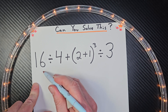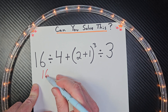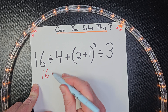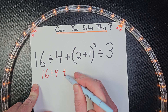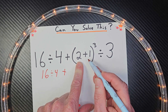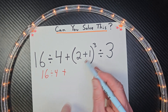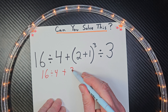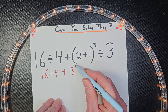So I'm going to go ahead and rewrite this: 16 divided by 4, plus — do what's inside parentheses — 2 plus 1 would be 3, and then 3 to the third power, divided by 3.